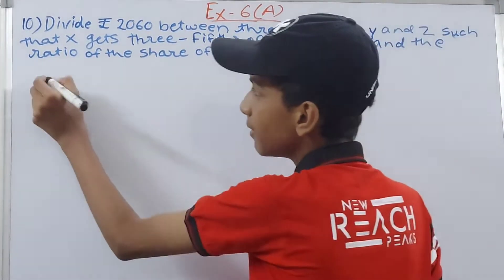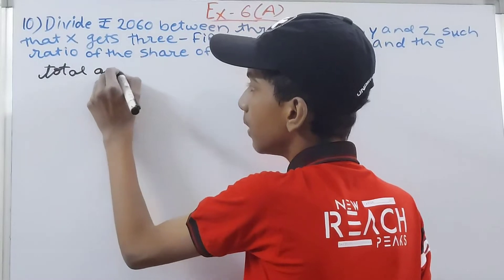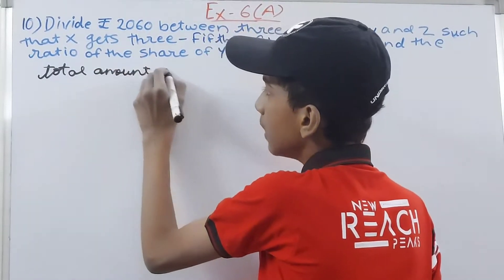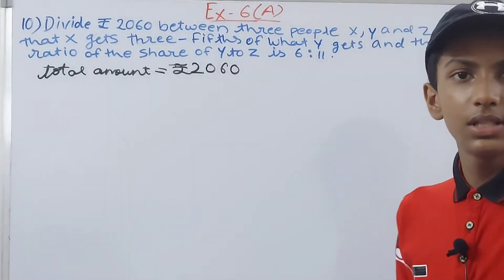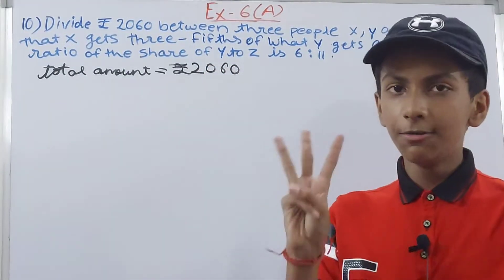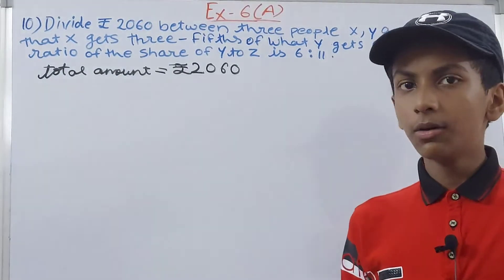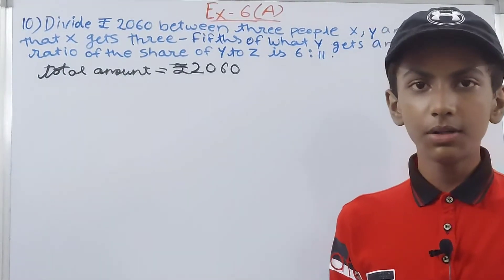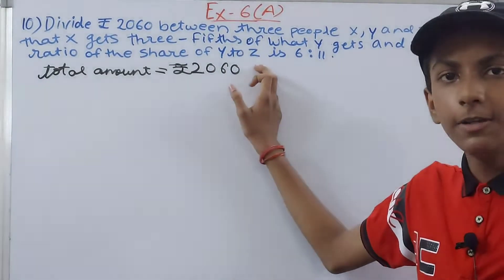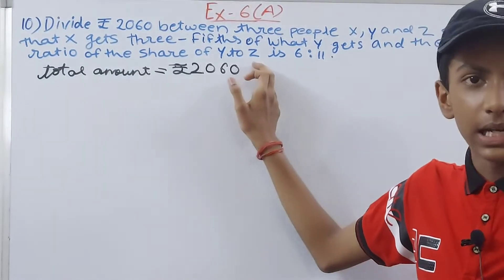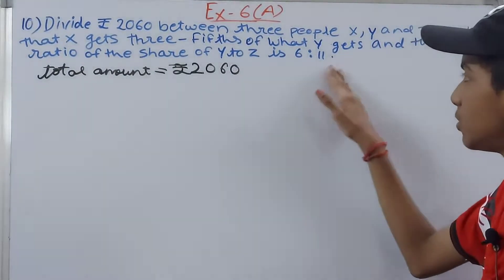So basically, what we have to see is that a total amount is given. The total amount is rupees 2060. We have to divide rupees 2060 among three people X, Y, and Z. A ratio is given: the ratio of the share of Y to Z, meaning the amount Y gets to the amount Z gets is 6 is to 11.